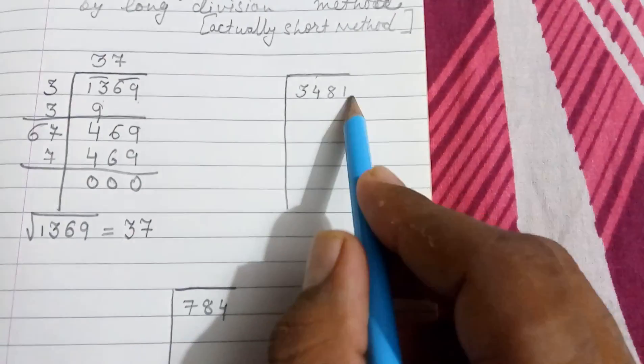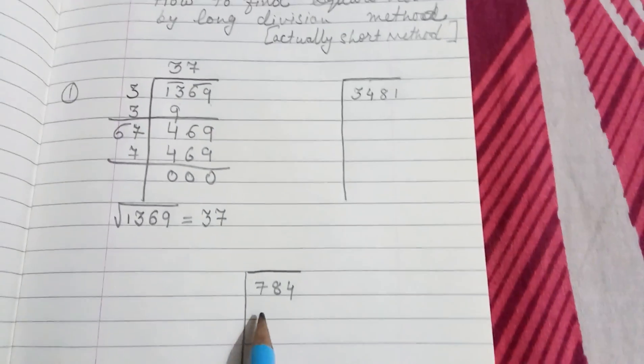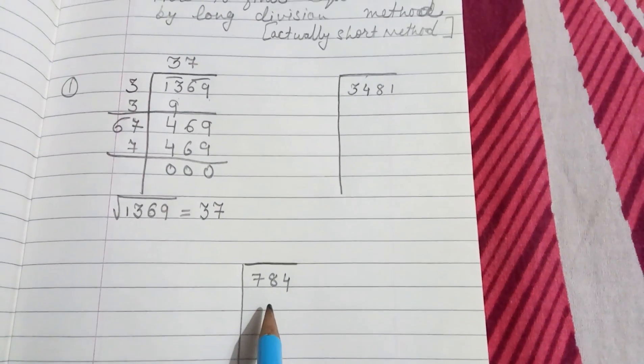The same way we can solve this. First of all, I am going to narrate this one because we are having 3 digits. Again from the back side, pair of 2. Now we are having only one number, so we have to take that one number only.